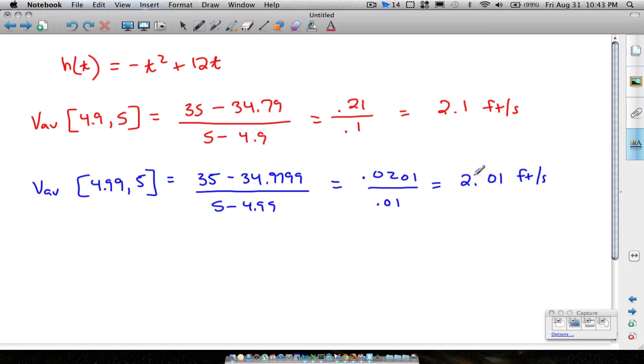What is this number like, it's getting real close to? It looks like it's getting very close to 2 feet per second. And this is what we're going to call our instantaneous velocity, instantaneous velocity, 2 feet per second.